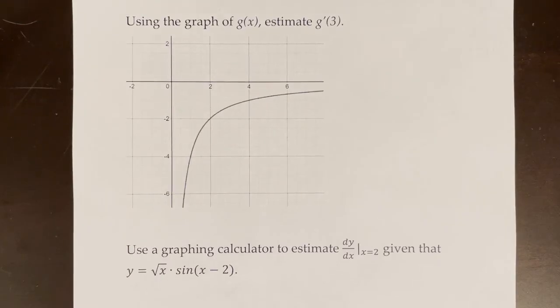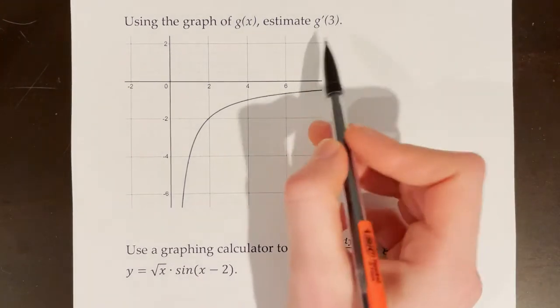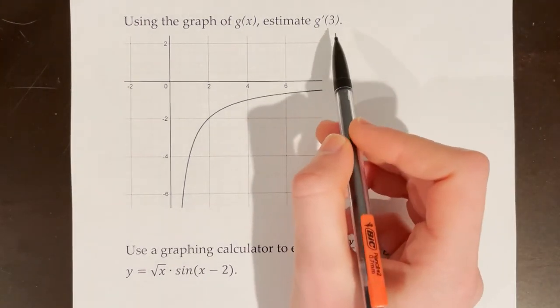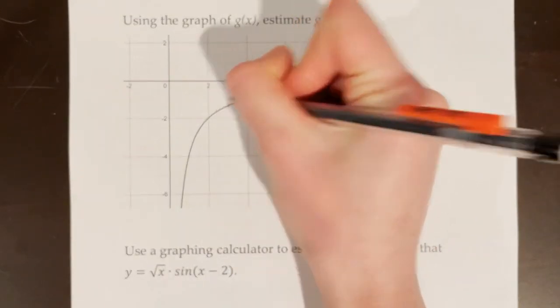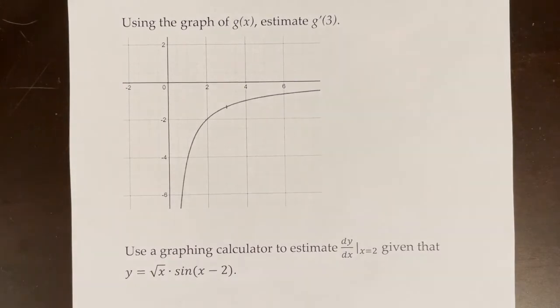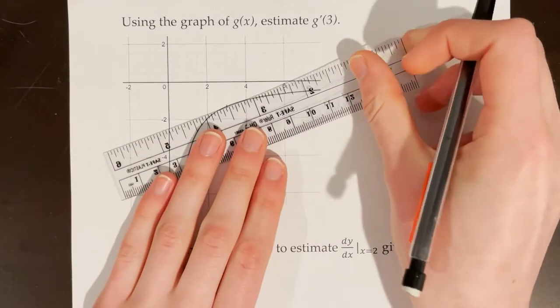Using the graph of g of x, estimate g prime of 3. Remember that g prime of 3 just means the slope of the tangent line at 3. So I'm going to mark where x is equal to 3 on my graph. And then I'm going to sketch in an approximate tangent line.